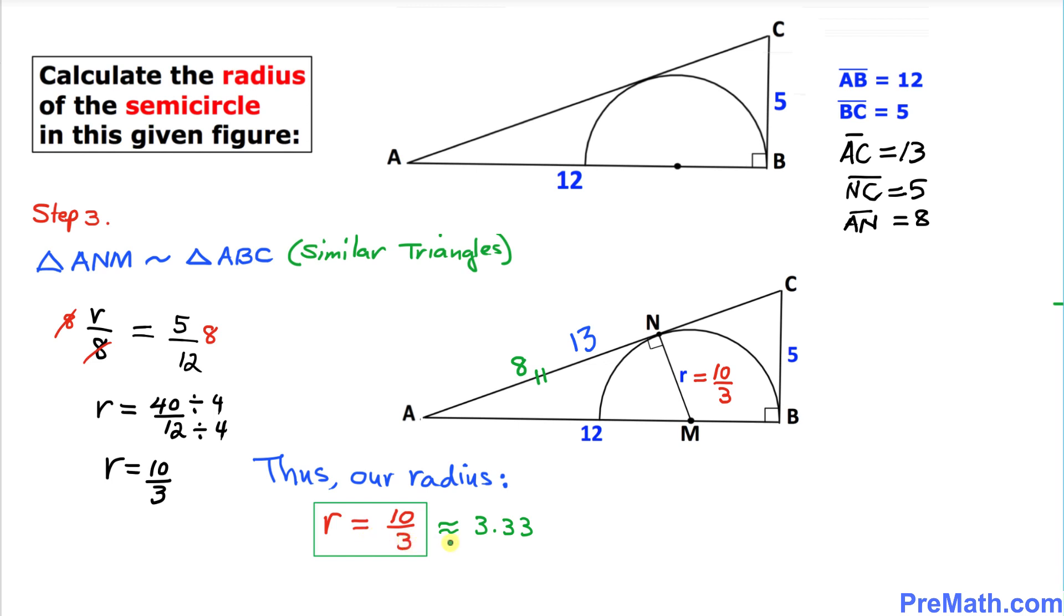Thus, our radius is R equals 10 over 3, or approximately 3.33 units. Thanks for watching, and please don't forget to subscribe to my channel for more exciting videos.